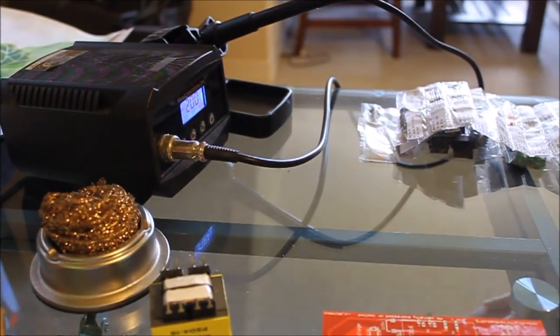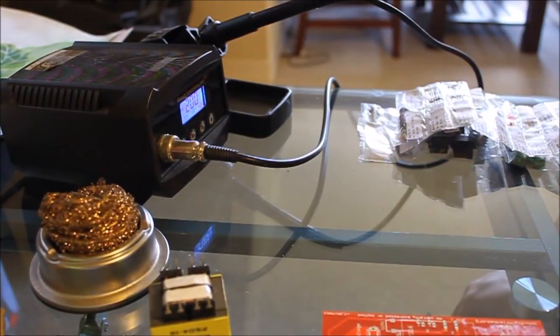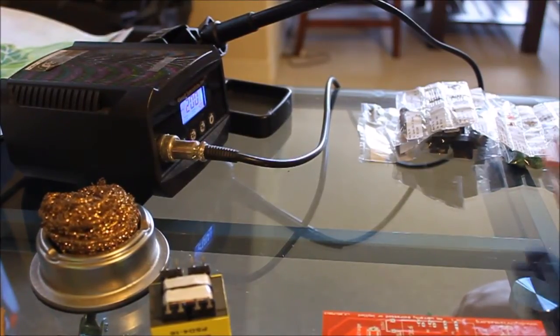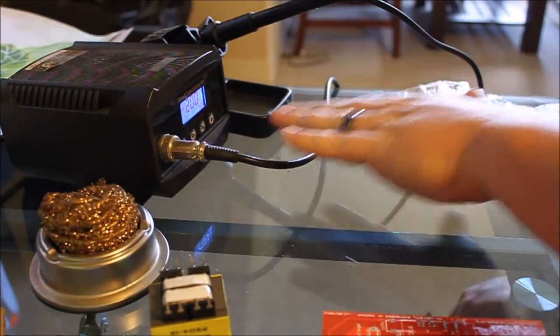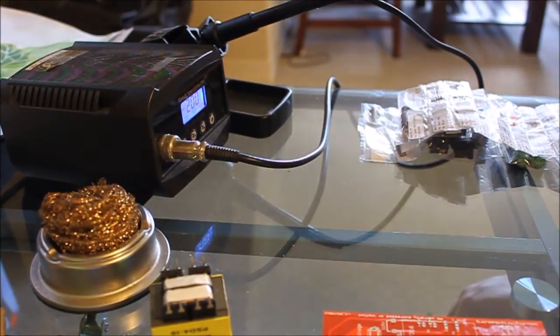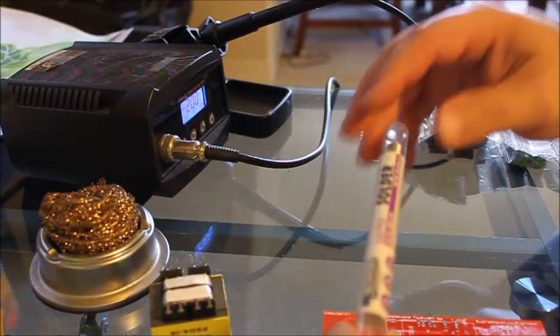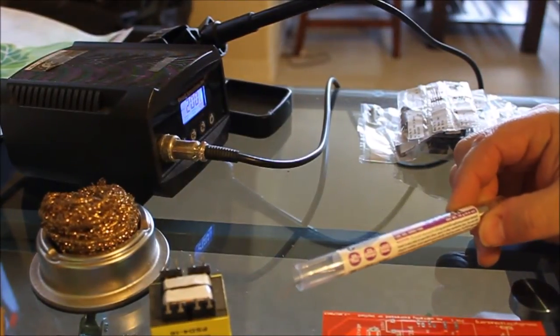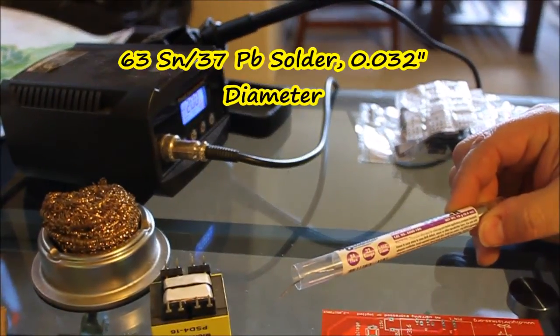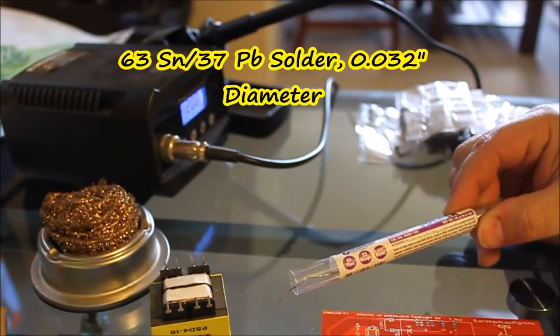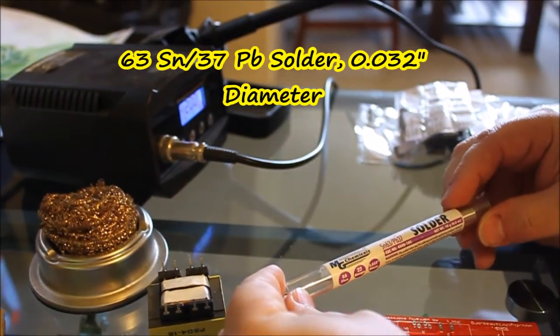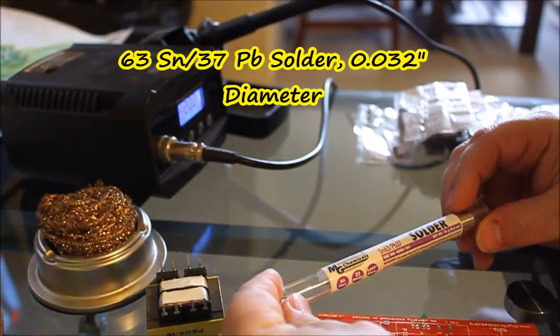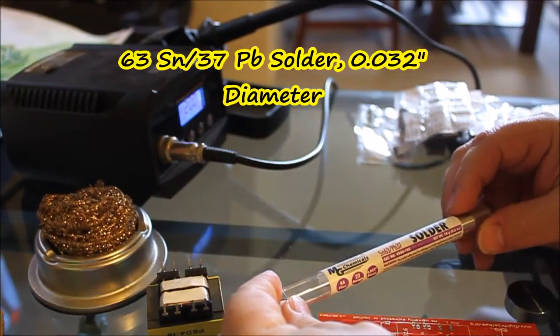PCB's been checked, we know the parts are there, we have the soldering station. The next thing we're going to need is solder. I'm going to see if we can get a good shot of exactly what I'm using for solder here.